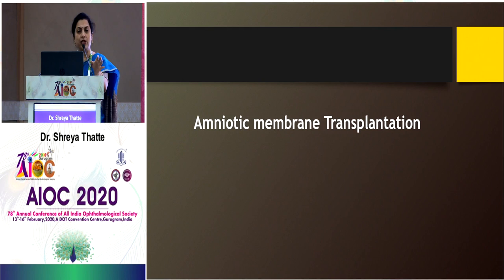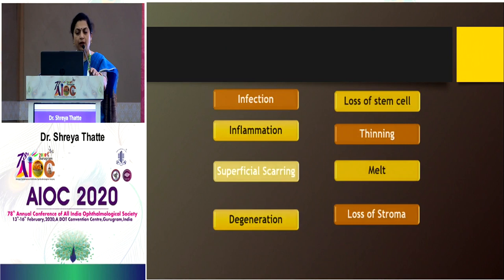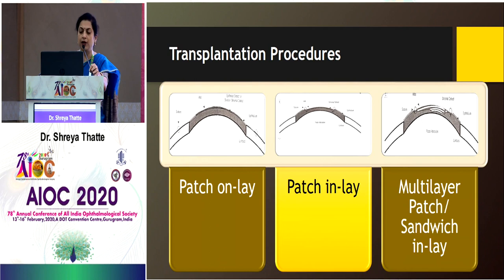Amniotic membrane stimulates re-epithelialization, has anti-secretase activity, has anti-inflammatory quality, and has high tensile strength for use over larger surface areas. Transplantation procedures include: patch onlay graft, patch inlay, and multi-layer patch or sandwich inlay graft. It can be used in both acute and chronic conditions. In acute chemical burns, you cover the entire ocular surface with amniotic membrane — results show quite good healing with minimal scar formation. In chronic conditions, it restores corneal integrity in pathologies like band keratopathy: perform simple keratectomy, apply amniotic membrane, and there is definite improvement in corneal haze.